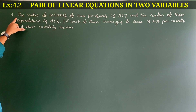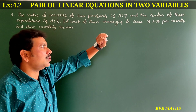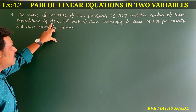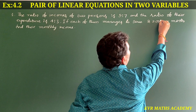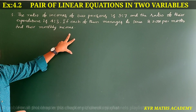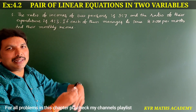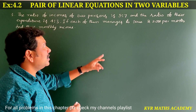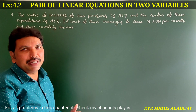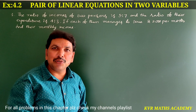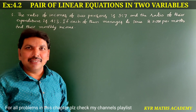This is the first question in Exercise 4.2. The ratio of incomes of two persons is 9:7 and the ratio of their expenditure is 4:3. If each of them manages to save rupees 2000 per month, find their monthly income.